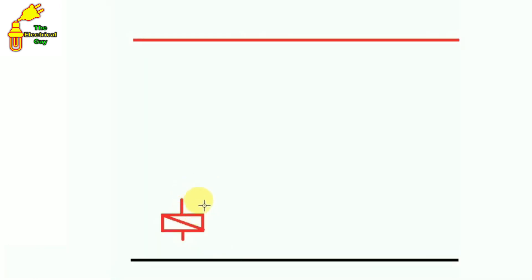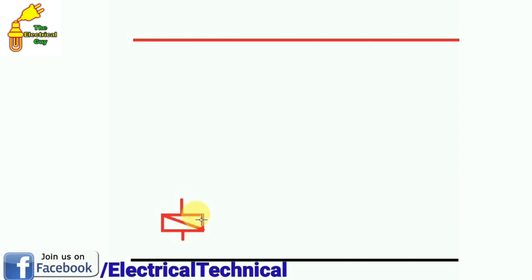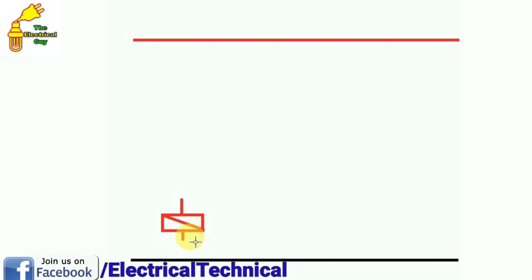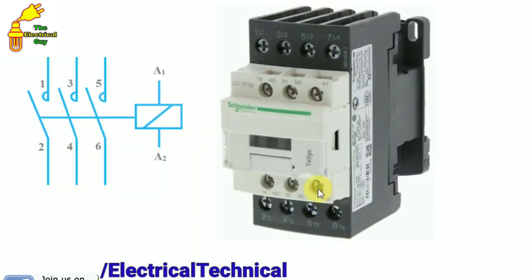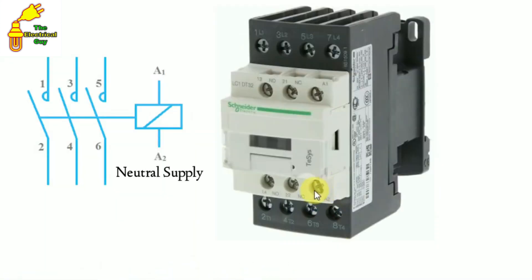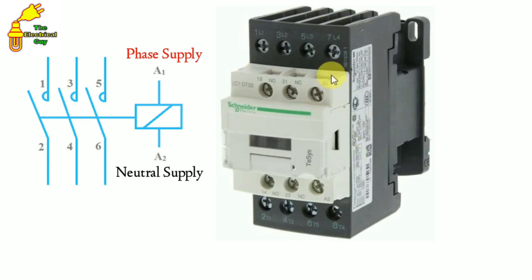The terminal at the lower side is the A2 terminal. At this terminal we connect neutral supply. So here is the A2 terminal where we provide neutral supply, and this one is the A1 terminal where we provide phase supply — to the coil of the contactor.